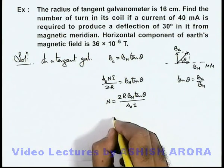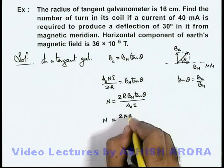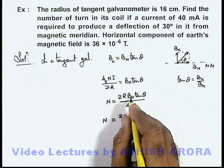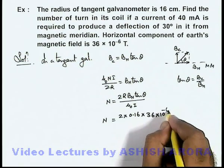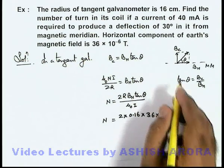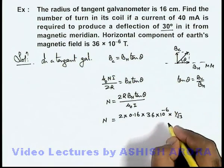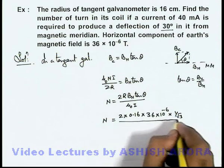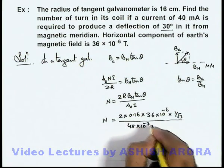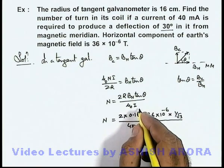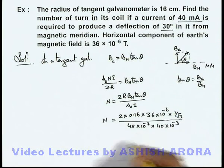Substituting the values, we get N = 2 × 0.16 × 36×10⁻⁶ × tan 30°. Since tan 30° = 1/√3, this becomes (2 × 0.16 × 36×10⁻⁶ × 1/√3) / (4π×10⁻⁷ × 40×10⁻³).